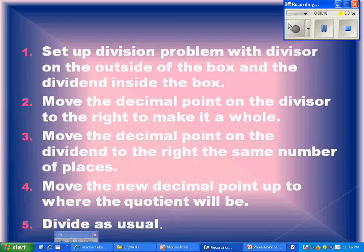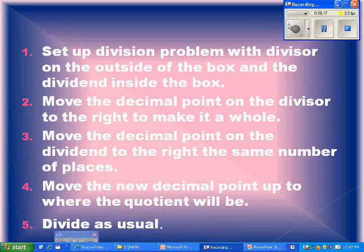Move the decimal point on the divisor to the right to make it a whole number. Move the decimal point on the dividend to the right the same number of places. Move the new decimal point up to where the quotient will be. Divide as usual.